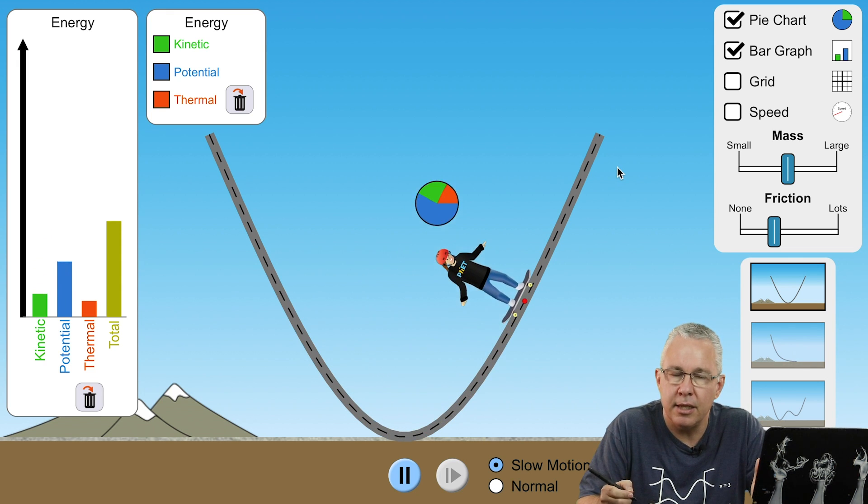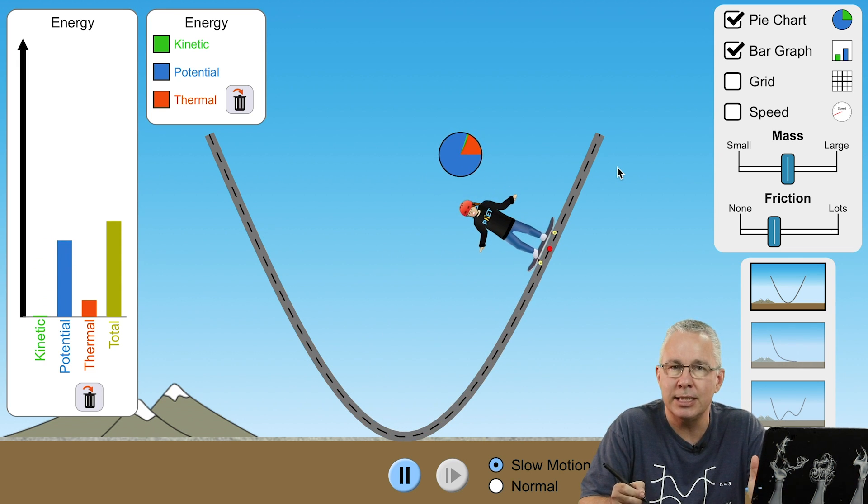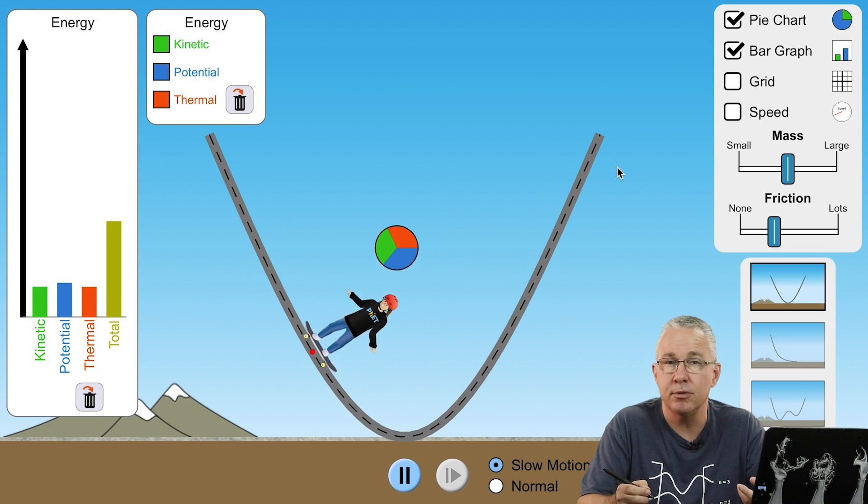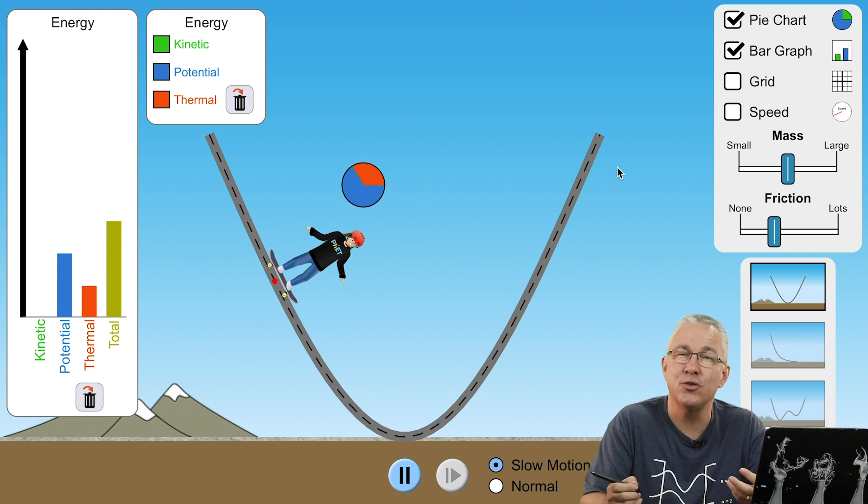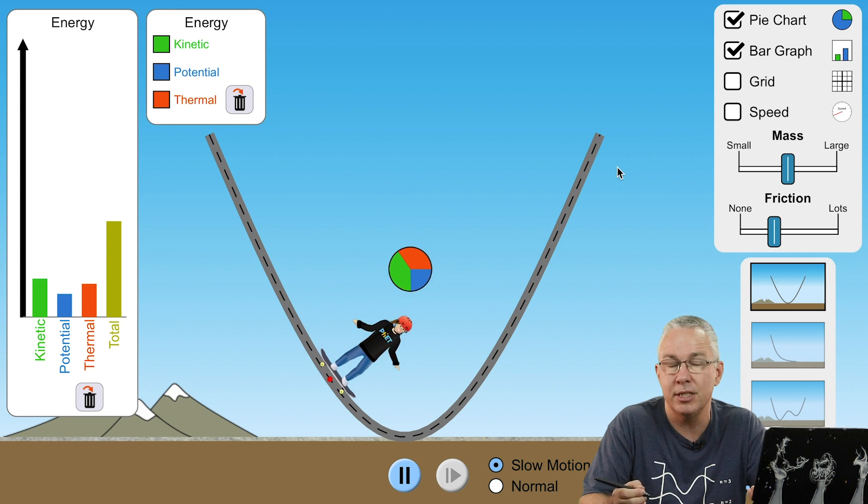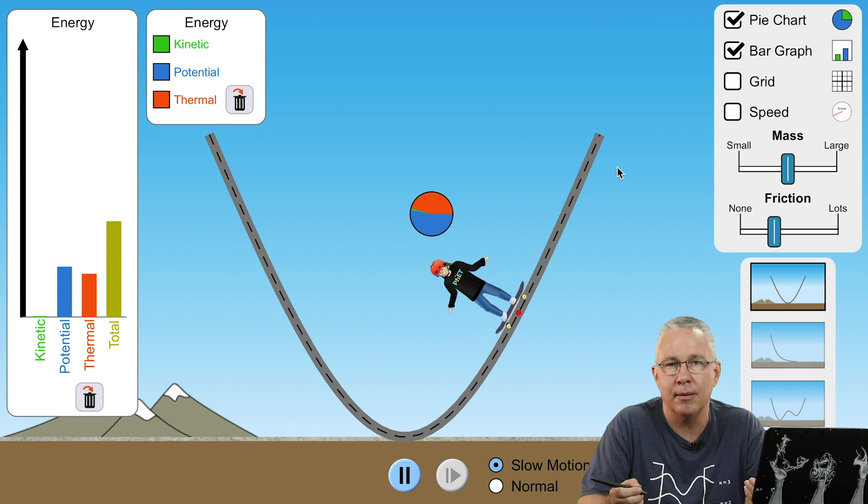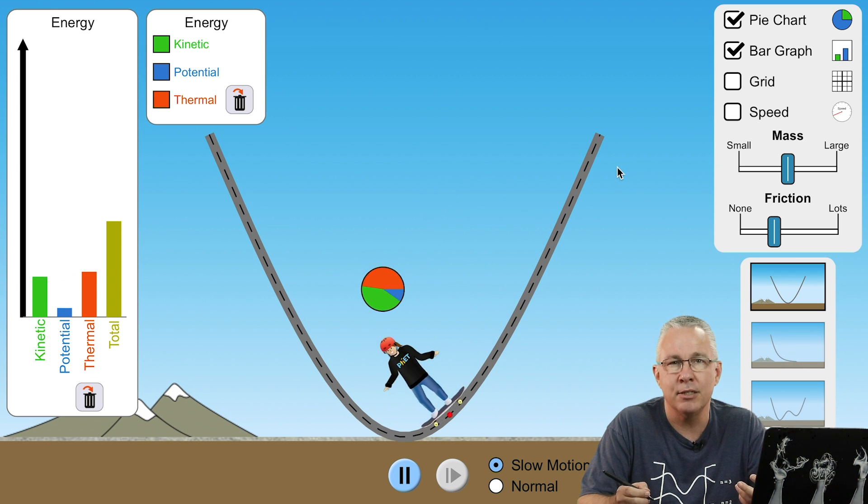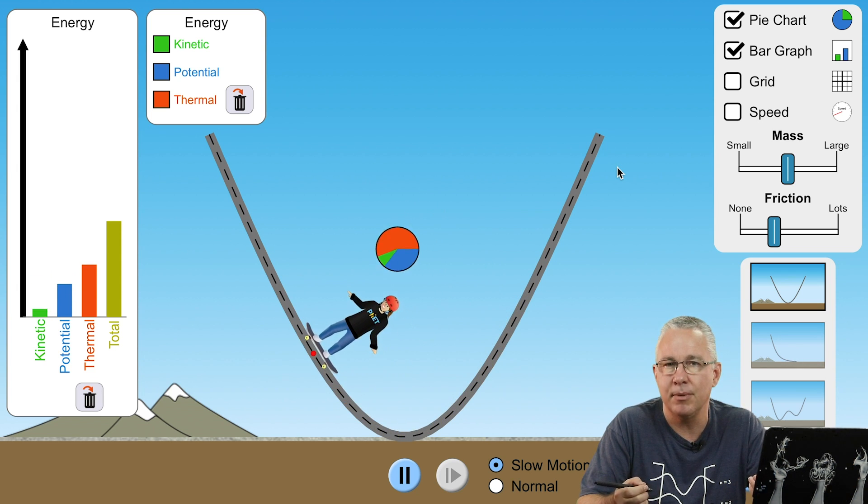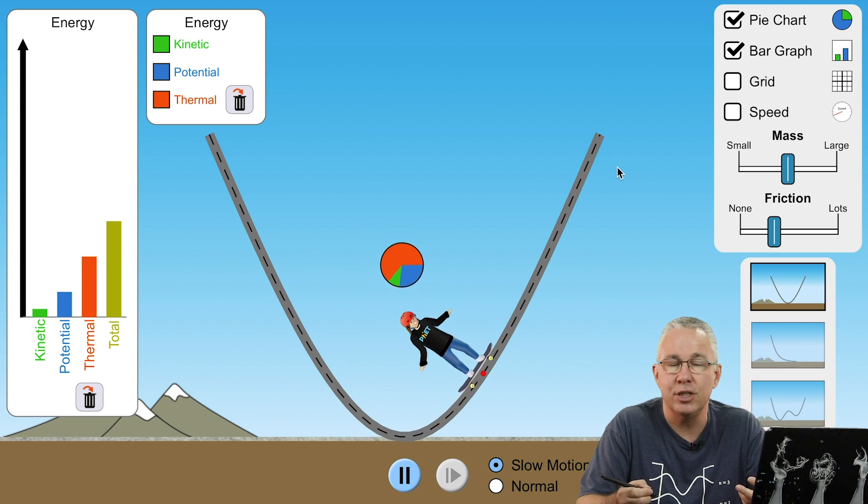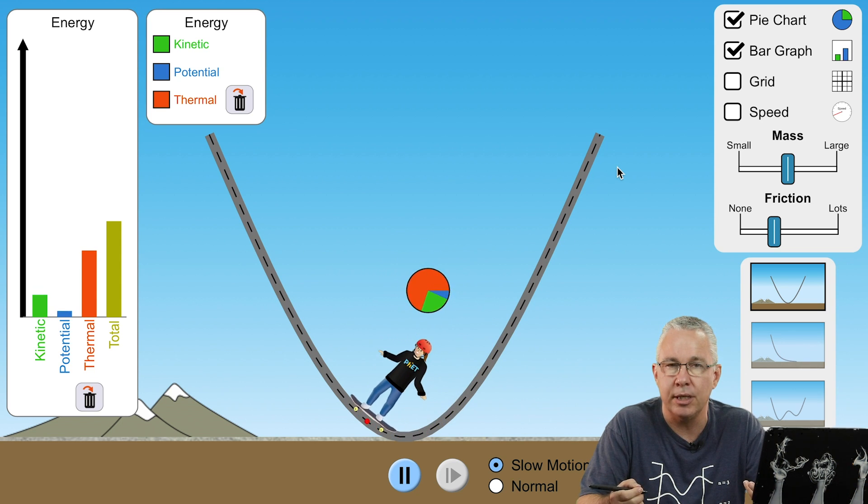So you see the total energy still stays the same, but because now we're losing energy in terms of thermal energy which we cannot transform back into the potential or kinetic energy, as a result the skater doesn't end up going as high. As a result the skater doesn't end up going as fast. In other words, the kinetic energy lowers. The potential energy lowers because we're now losing some energy in terms of thermal energy.